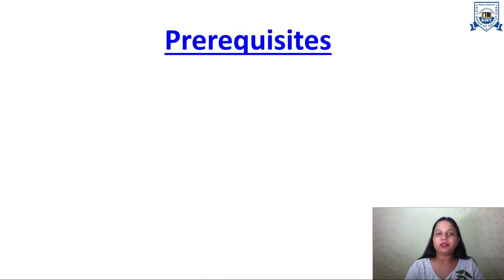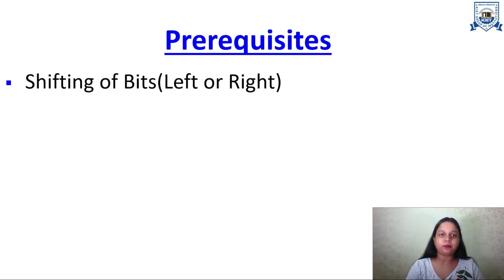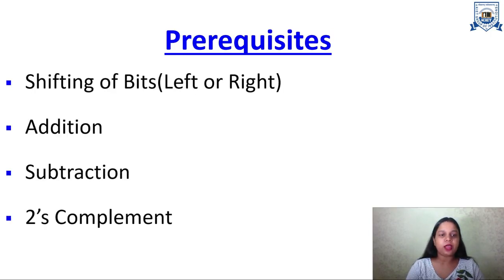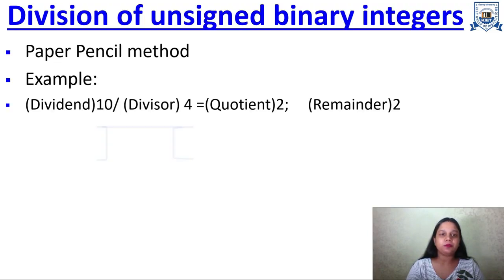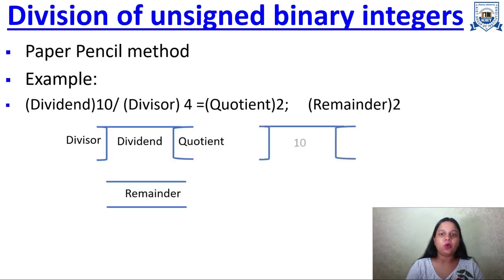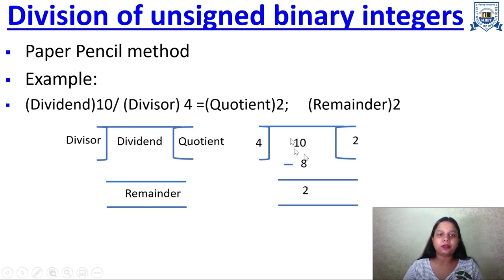The prerequisites are already discussed in the video of the restoring division method, which you must have already seen before going through this video. The prerequisites are shifting of left bits, addition, subtraction, and two's complement. We also review the pencil-and-paper method — the divisor, quotient, and remainder — for dividing any number by another.